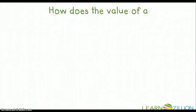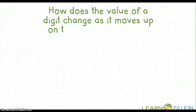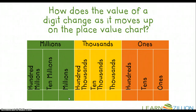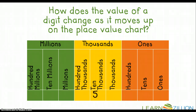So the question of the day is: how does the value of a digit change as it moves up on the place value chart? You have been seeing this place value chart all week long in our math flip videos. You know that we have the ones place all the way to the hundred millions place, and we've really been focusing on the ones to the millions. So when we have a number 5 on the place value chart, that 5 is represented by five ones. And as we move up the place value chart, that 5 increases in its value.